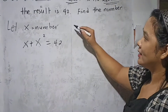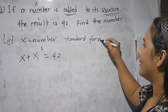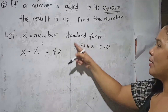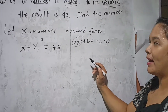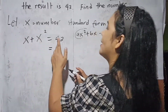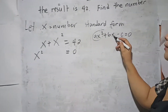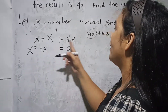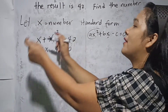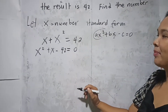We arrange this in standard form: ax squared plus bx plus c equals 0. So x squared comes first, then plus x, and then we transfer 42 to the left side. Since it is positive, it becomes negative when transferred. So the equation becomes x squared plus x minus 42 equals 0.